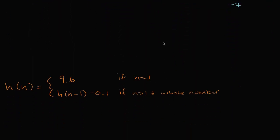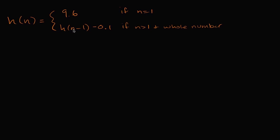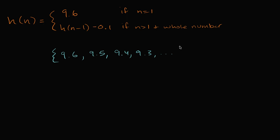Let's do another example, going the other way around. Here we have a sequence defined recursively, and I want to create a function that defines the sequence explicitly. When n is equal to one it starts at 9.6, and then every term is the previous term minus 0.1. So the second term is 9.5, then 9.4, then 9.3, and so on.